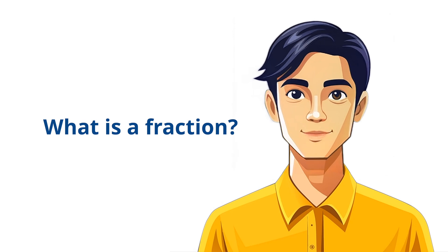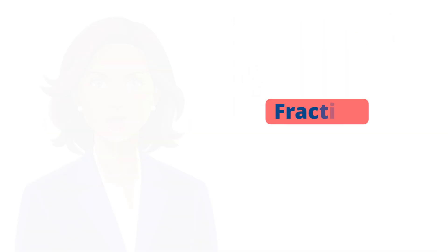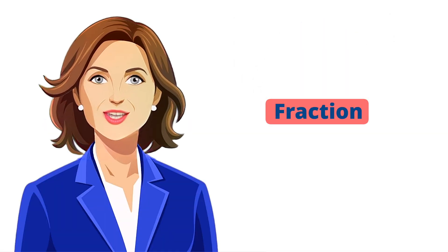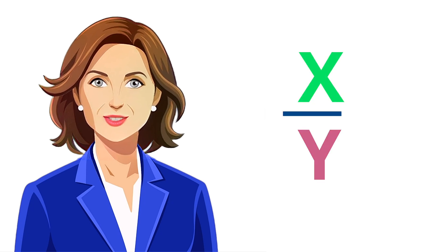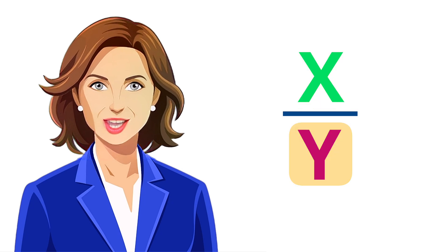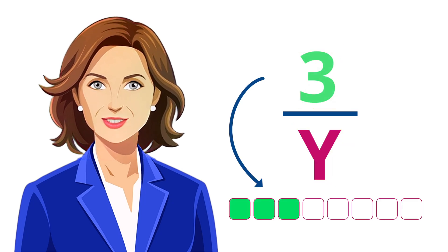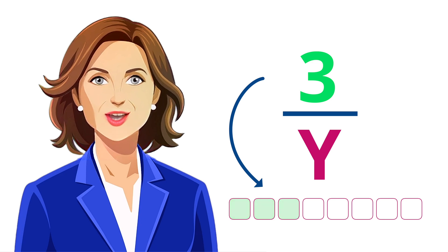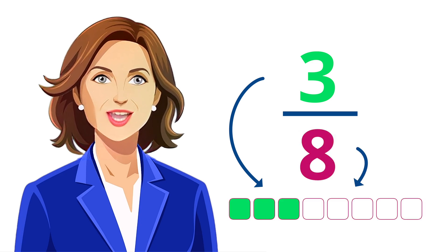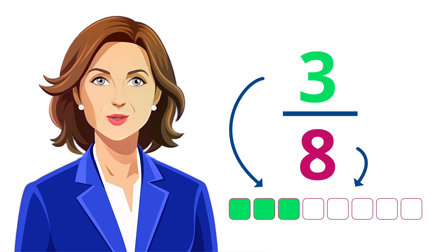First off, what exactly is a fraction? Great question. A fraction represents a part of a whole and is made up of two numbers: the numerator on top and the denominator on the bottom. The numerator tells us how many parts we have, while the denominator shows how many equal parts the whole is divided into.